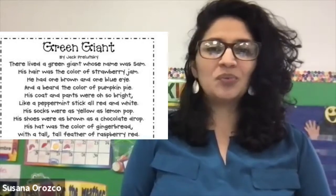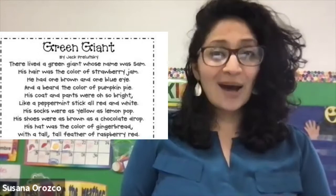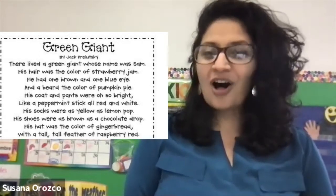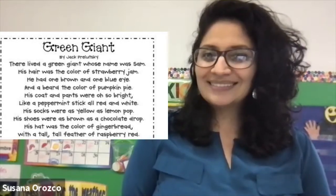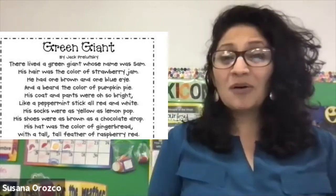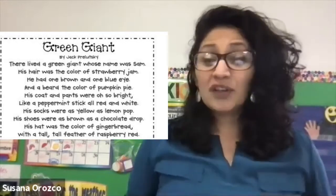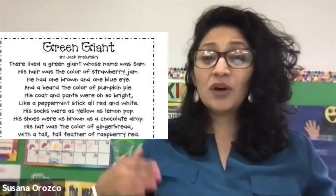His shoes were as brown as a chocolate drop. His hat was the color of gingerbread, with a tall, tall feather of raspberry red. That poem is called "The Green Giant." If you feel like you need to listen to it again, go for it — rewind me. If you want to go ahead and draw it, pause me right here and come back when you're ready for poem number two.